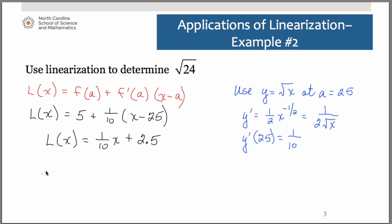We can then use this to approximate the true value of square root of 24. We would have 1 tenth times 24, plus 2.5. That ends up to be 2.4 plus 2.5, and we get 4.9. Remember how we had said earlier, that our guess is that it would be closer to 5, then it would be 4. If you go ahead and actually do this on your calculator, again, you should find that the true value of square root of 24 is pretty close to 4.9.